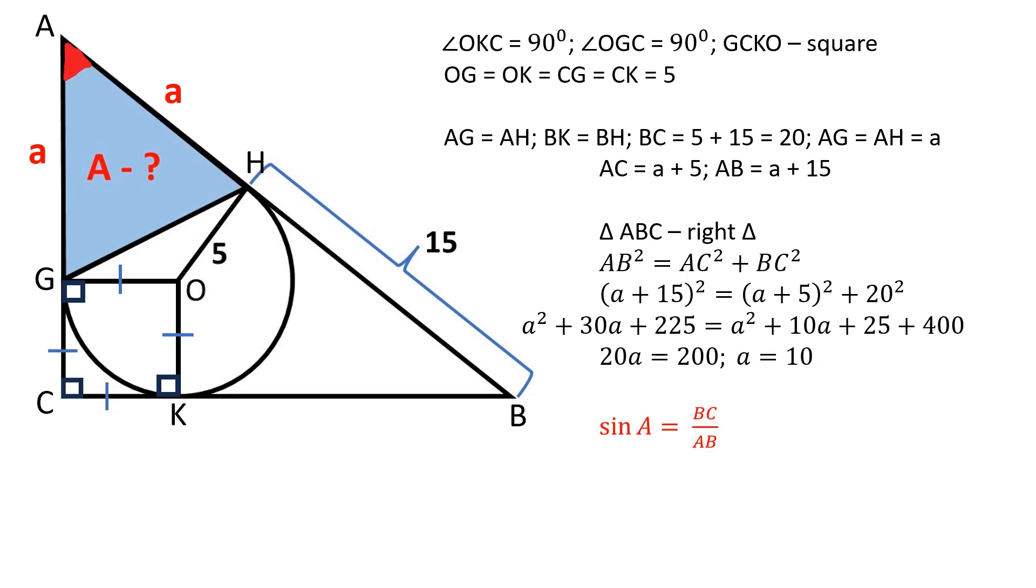The sine of an angle is the trigonometric ratio of the opposite side to the hypotenuse. The sine of A is equal to BC over AB which is equal to 4 over 5.